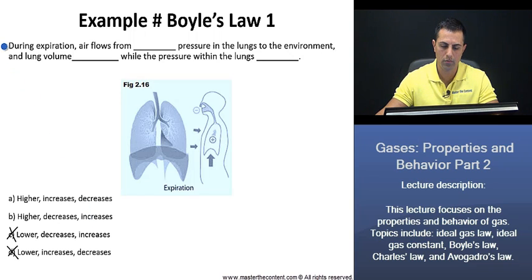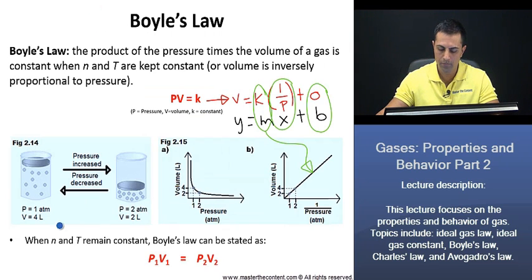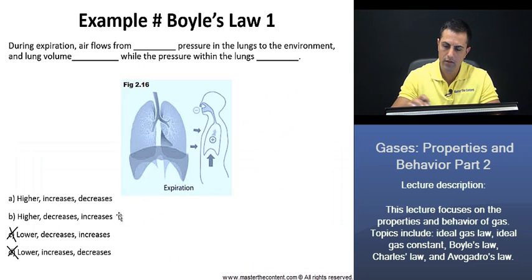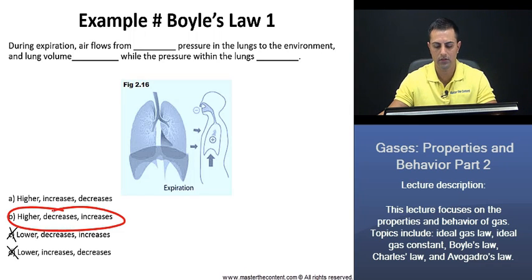During expiration, air flows from higher pressure in the lungs to the environment, and lung volume increases or decreases while the pressure within the lungs increases or decreases. During expiration, the lung volume is going to decrease while the pressure within the lungs increases. And that follows, as we stated from Boyle's Law, right? We see here as volume decreased, the pressure increased, right? Thus, we can confidently then say that B is going to be our answer as such. Great, let's then move on to our next question.